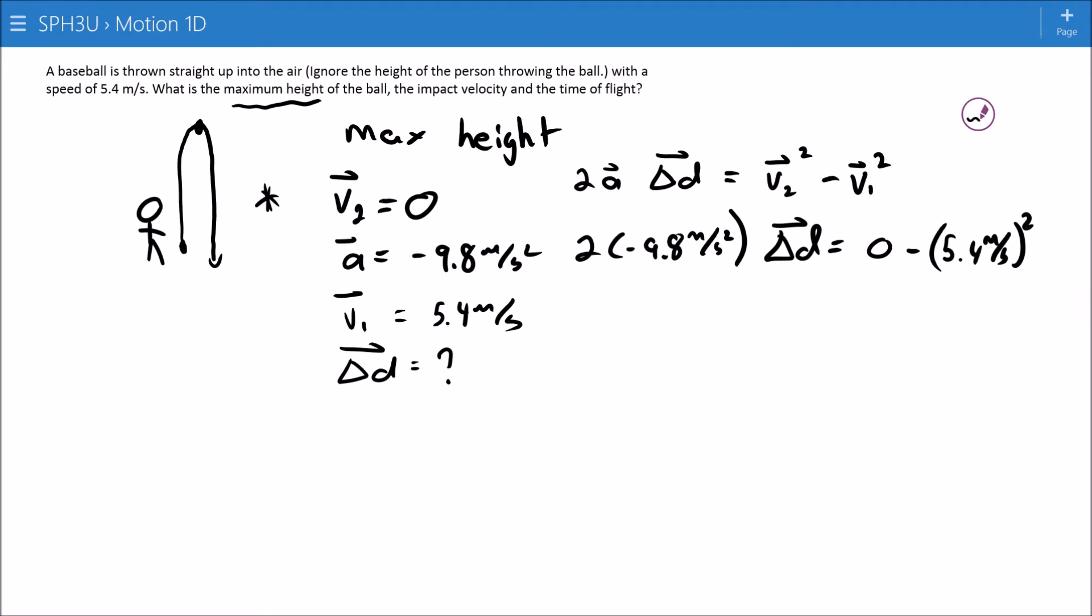And again, a reminder, I mentioned this a few slides back, but this negative here is outside of those brackets. So remember, when it gets squared, that negative doesn't go away. You can see through it here.